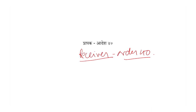Order 40 mein aai hai, isme bhi 5 rules hain. Rule 1 kya bolta hai — Order 40 ke Rule 1 mein appointment of receiver. Jab receiver ka appointment hoga, toh isme kin-kin cheezon ko dhyan mein rakhna hai.